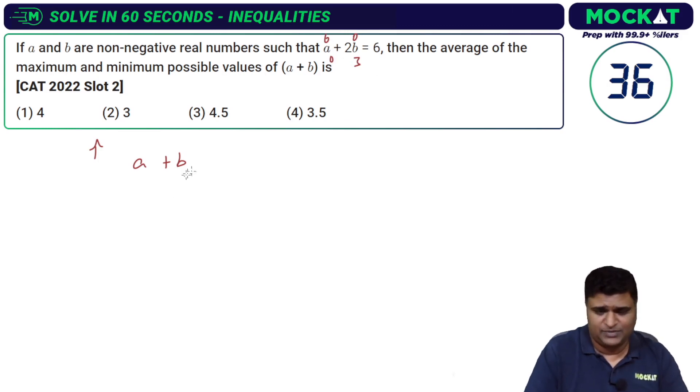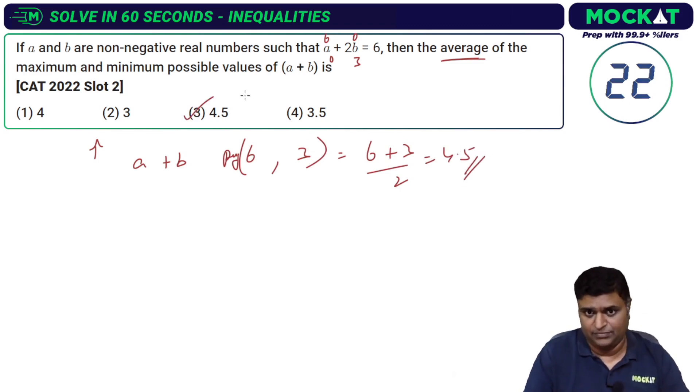So it's going to be 6 and 3. What we are required to find is the average, and this is where I actually went wrong in this exam. What is the average of 6 and 3? 6 plus 3 by 2, that comes to 4.5. Option 3 becomes the answer.